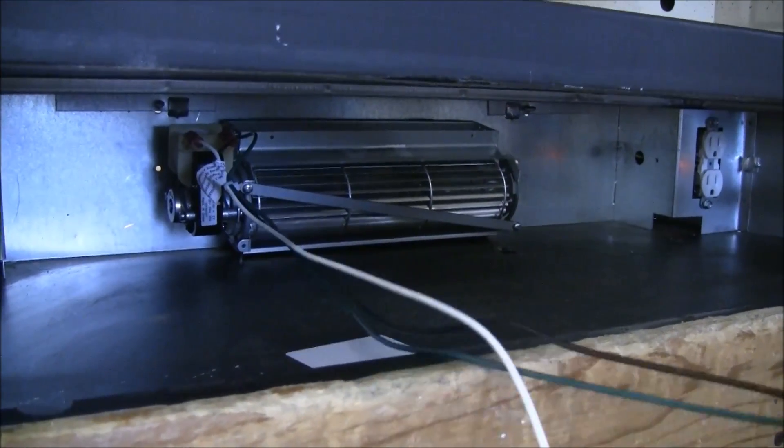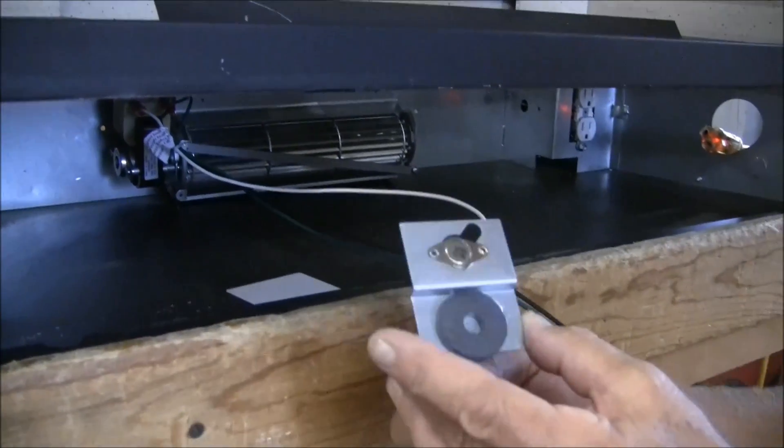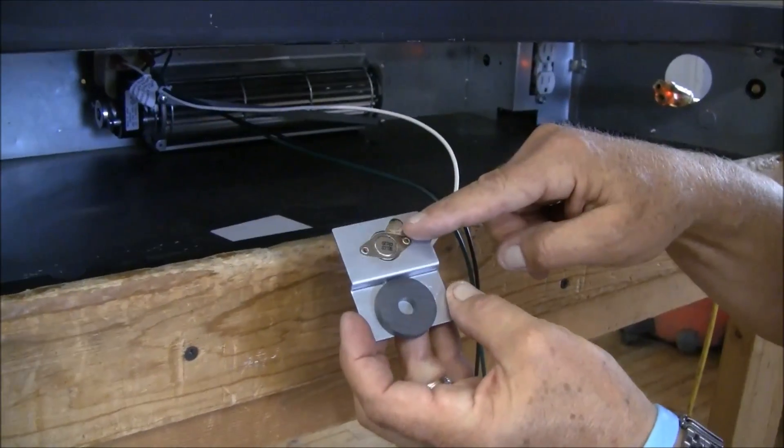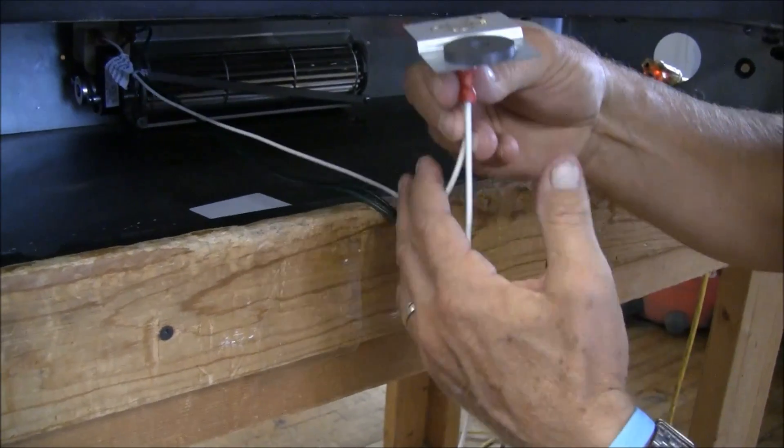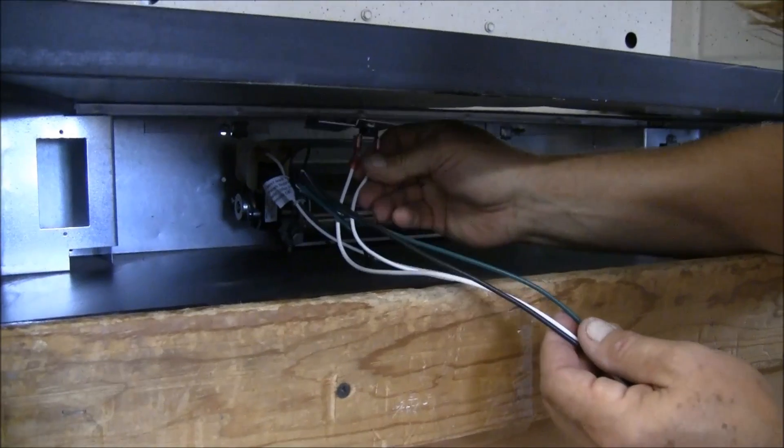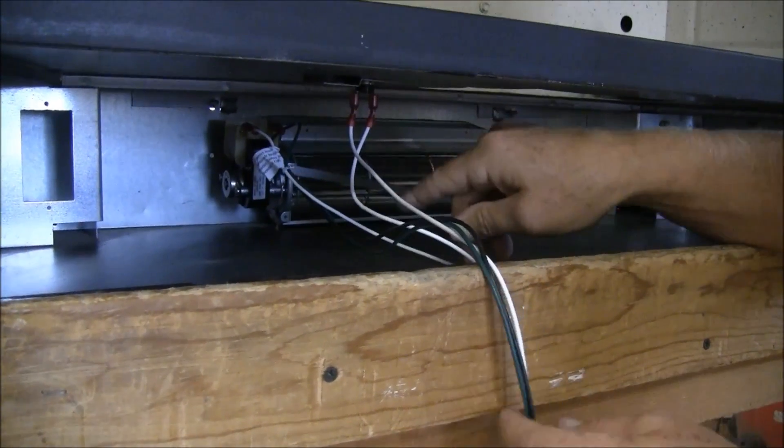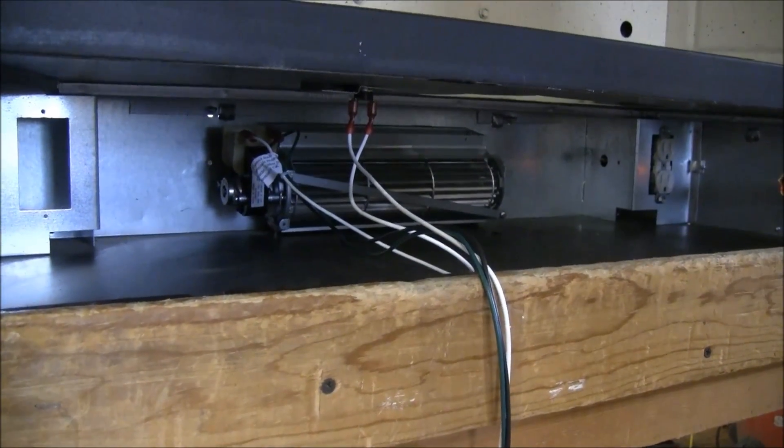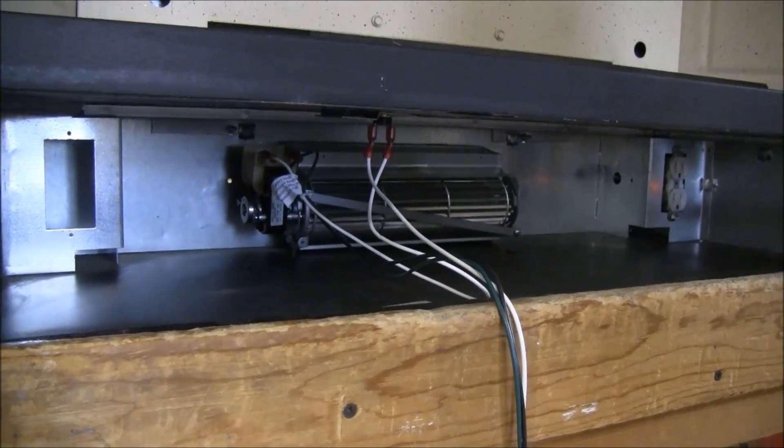The next thing you're going to have to do is, this is the temperature sensor right here. It's on a bracket with a magnet. We're going to let this adhere to the bottom of the firebox. When that sensor reaches 120 degrees after you have a fire started, the blowers will turn on.